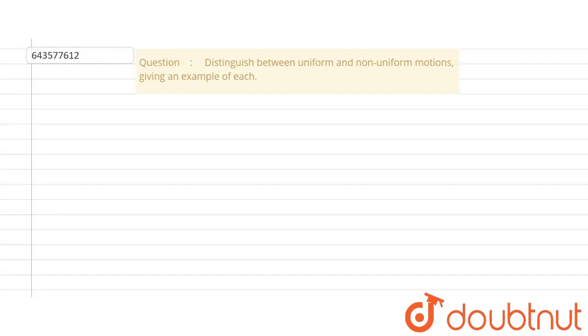Okay, so we'll distinguish. Let us make a partition here and accordingly distinguish. So first, on this side we have uniform motion, and this side here we have non-uniform motion.